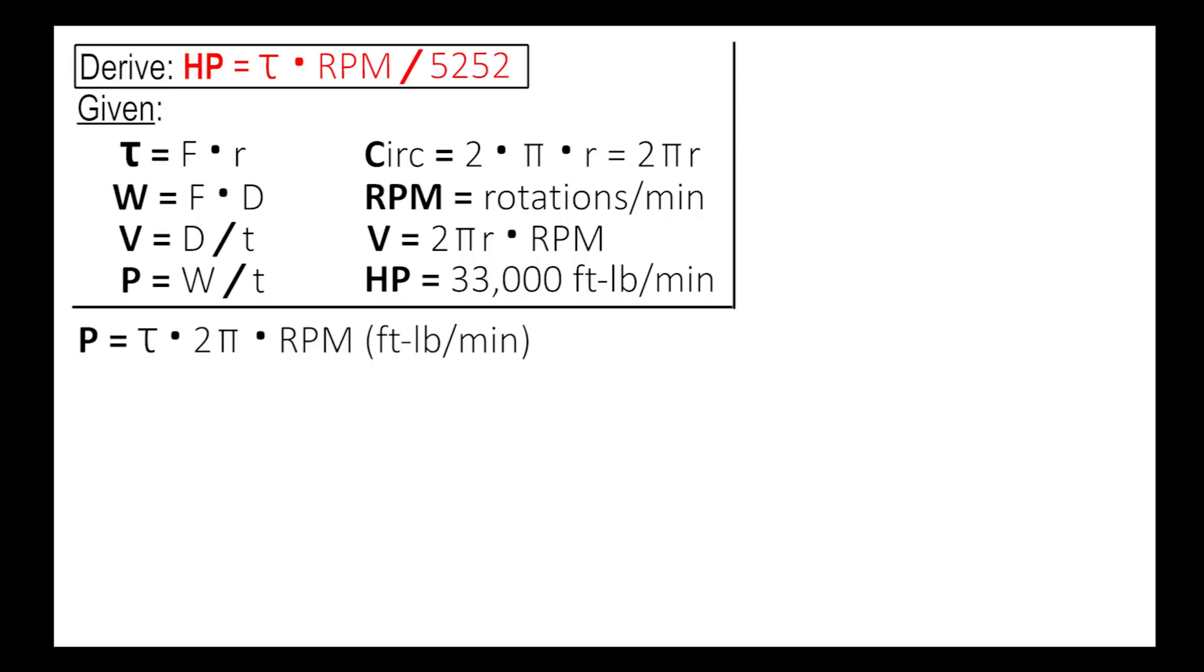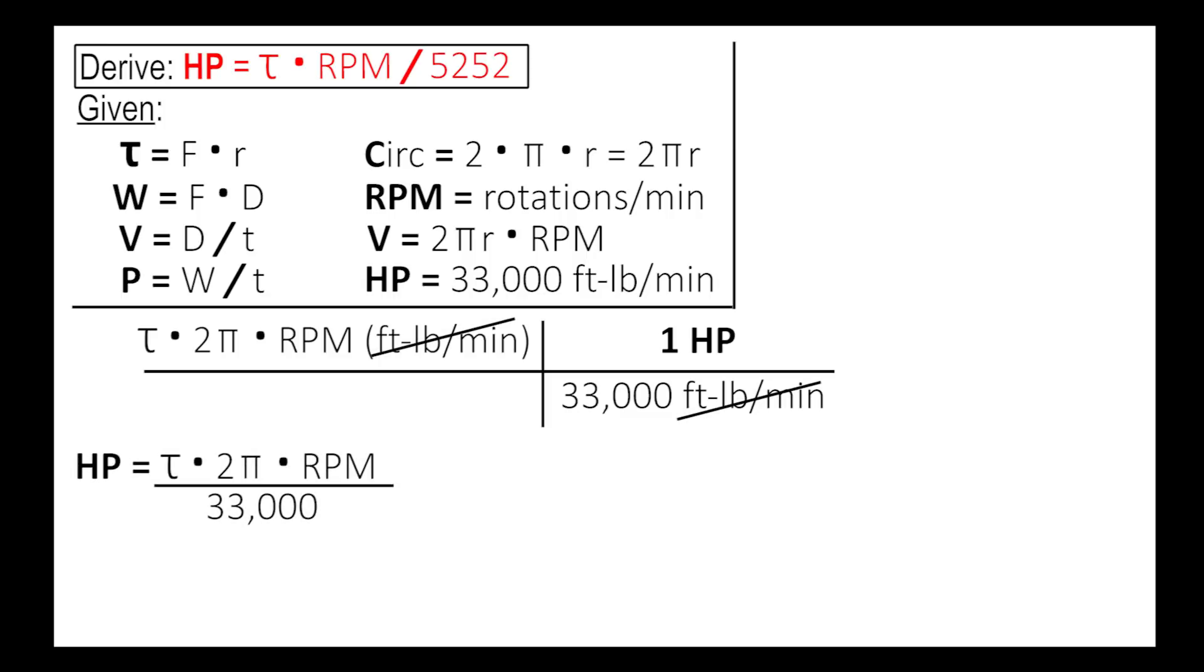With one horsepower over 33,000 foot-pounds per minute, those foot-pounds per minute cancel out, which gives us horsepower equals torque times 2 pi times RPM divided by 33,000.